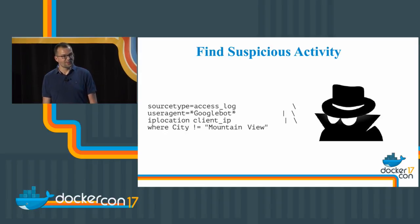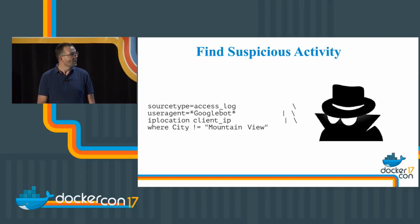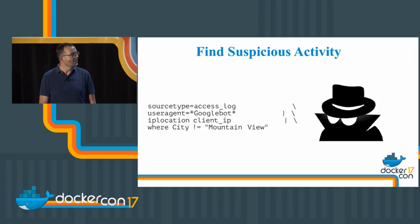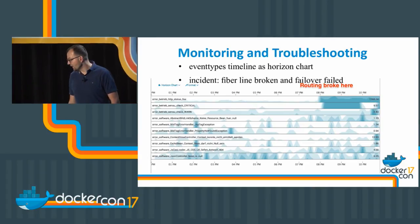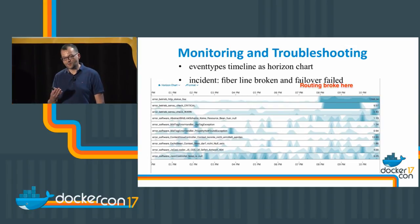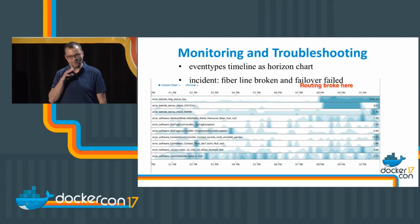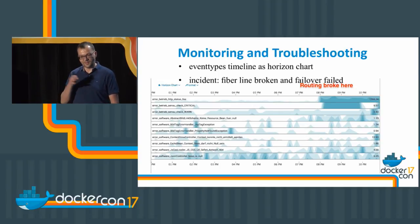You can also find suspicious activity on your platform. For example, using the access log, someone pretends to be a Googlebot, but the IP location lookup shows it's not coming from Mountain View. Splunk has a cool lookup feature where you look up the IP address in the field called 'client IP' and it returns the city, country, and other location data. When reading log files manually, you mentally filter out everything unimportant — info, warnings — and just scan for errors and exceptions. Splunk helps here by providing a feature called event types.